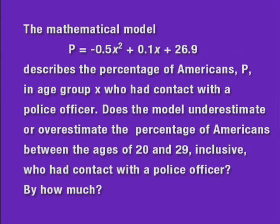The mathematical model P equals negative 5 tenths times x squared plus 1 tenth times x plus 26 and 9 tenths describes the percentage of Americans, P, in age group x who had contact with a police officer.